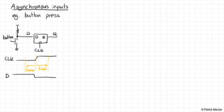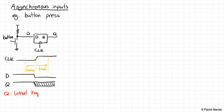The question is: what happens to the output if D transitions somewhere in the middle? We know what happens when D transitions outside of the setup-hold aperture, but in this case we have no idea what's going to happen. It could be one or zero, or somewhere in the middle — hard to say. That's the topic of today's lecture.